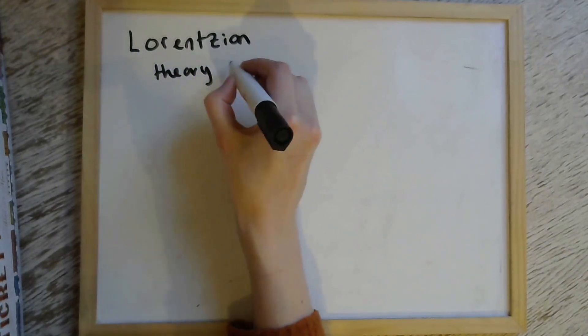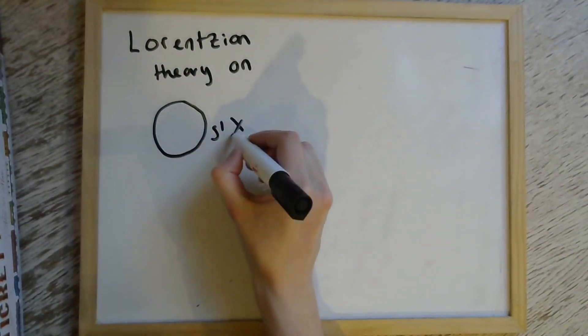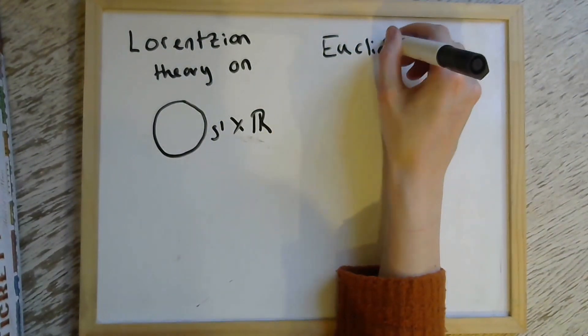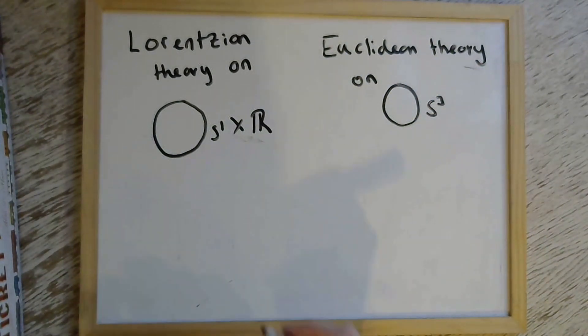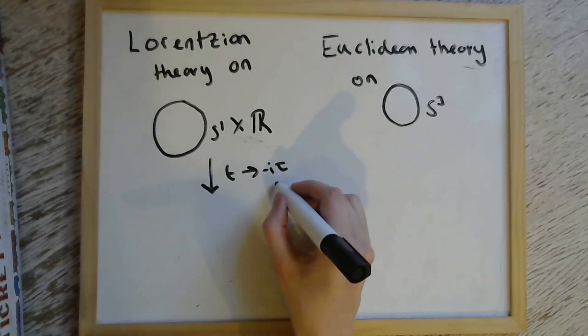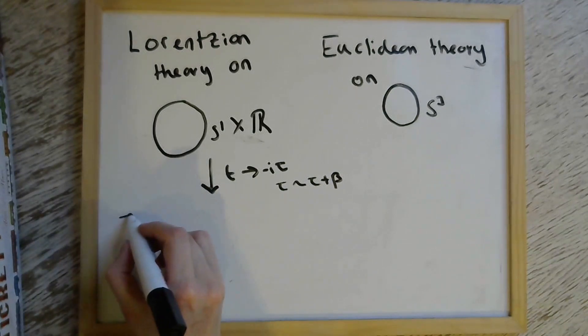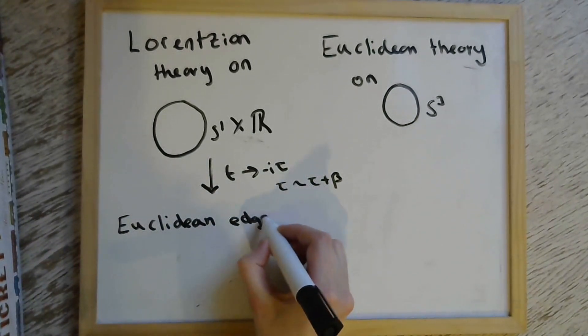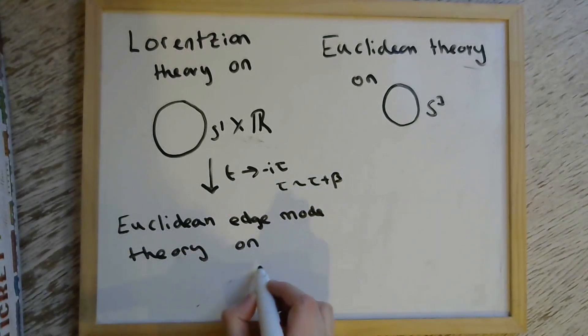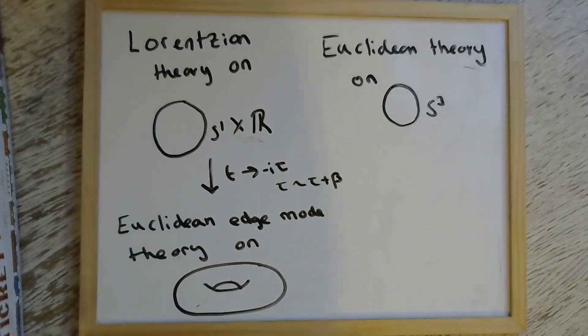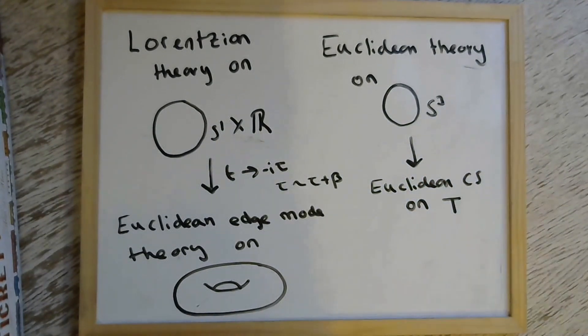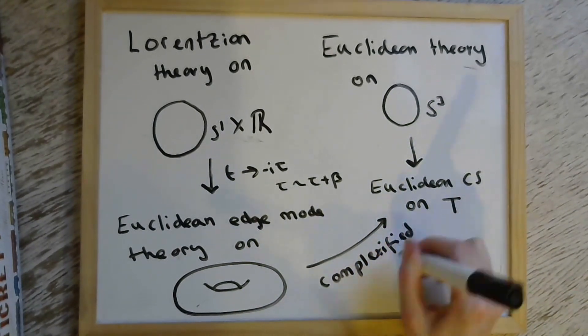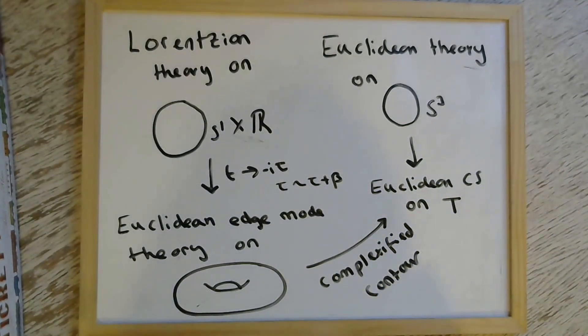So we'd like to find some relationship between these two results that we've gotten. So on the one hand, we have this Lorentzian edge mode theory that has a complexified U(1) gauge group that's living on the boundary of a disk. So it's living on S¹×R. And we want to compare it to this Euclidean Chern-Simons theory that we've put on the three sphere that has gauge group U(1)×U(1). One way we could think about going about that would be to maybe Wick rotate this edge mode theory so that we end up with now obviously a Euclidean signature edge mode theory. But importantly, this still has the gauge group complexified U(1). But now because we've periodically identified the τ coordinate, this is living on the torus. And we could see what happens if we compare this to the U(1)×U(1) Euclidean theory on the torus.